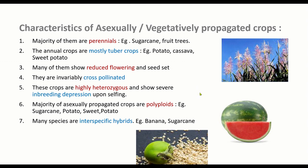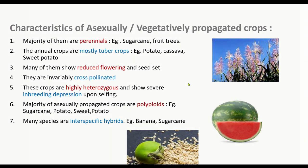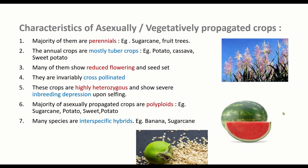These crops are invariably cross-pollinated, because most asexually propagated crop plants are cross-pollinated. In cross-pollinated crop plants, selfing will give inbreeding depression. So if these plants flower and are selfed, they suffer from inbreeding depression. These crops are also highly heterozygous and show severe inbreeding depression upon selfing. The majority of asexually propagated crops are polyploid — examples include sugarcane, banana, and potato, which is a tetraploid.